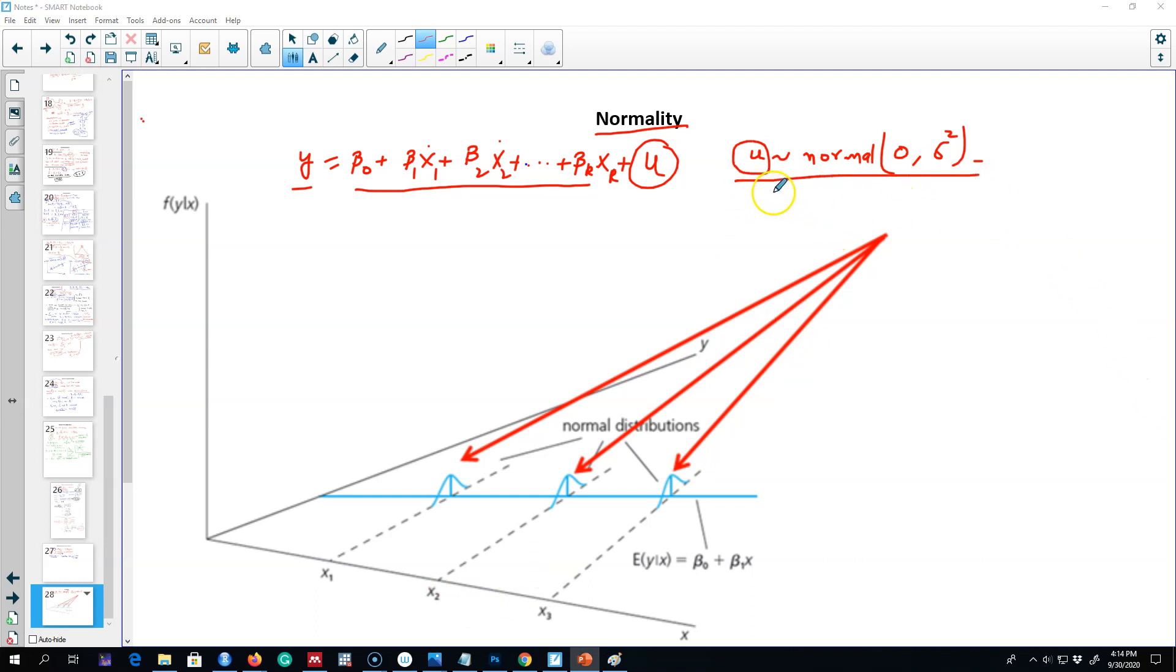This error term is the summation of many different unobservable factors. What we are saying is that the sum of all those unobservable independent factors is normally distributed. There will be different distributions that may be affecting this error term. Remember, anything not captured by these x variables will be captured by this error term. In summation, they cancel each other.